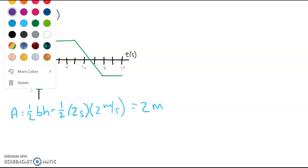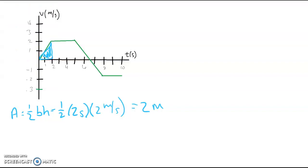So now let's break this up. And the next region that's going to be easy is breaking up into this rectangle here. Well that's just going to be base times height. Our base here is 1, 2, 3 seconds, multiplied by our height of 2 meters per second, giving us positive 6 meters.